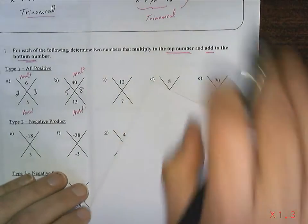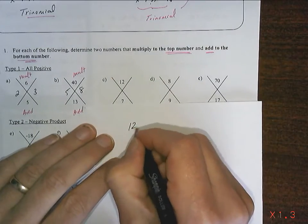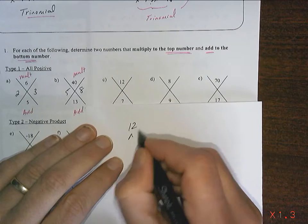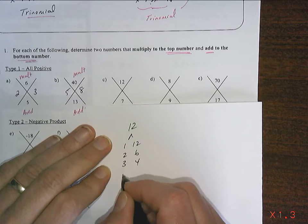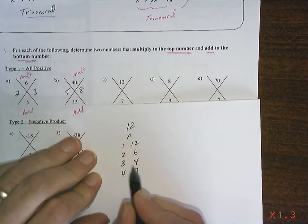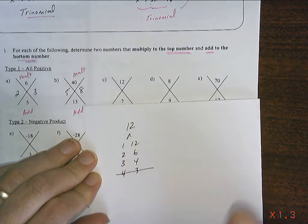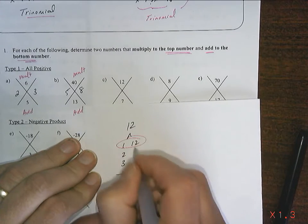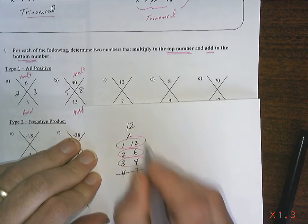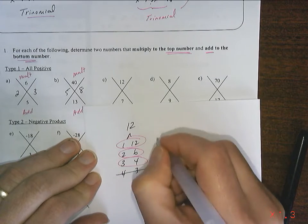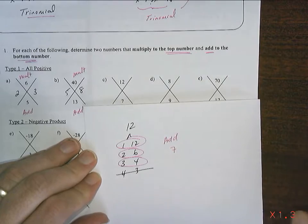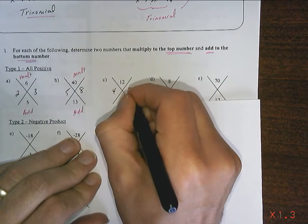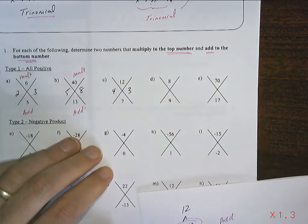12. Let's look at the factor tree method again. 12 divided by 1 is 12, 12 divided by 2 is 6, 12 divided by 3 is 4, 12 divided by 4 is 3. See how these have doubled over? We can stop. These are all the whole number factors of 12. So, now the question is which ones add to give 7? It's going to be 4 and 3.